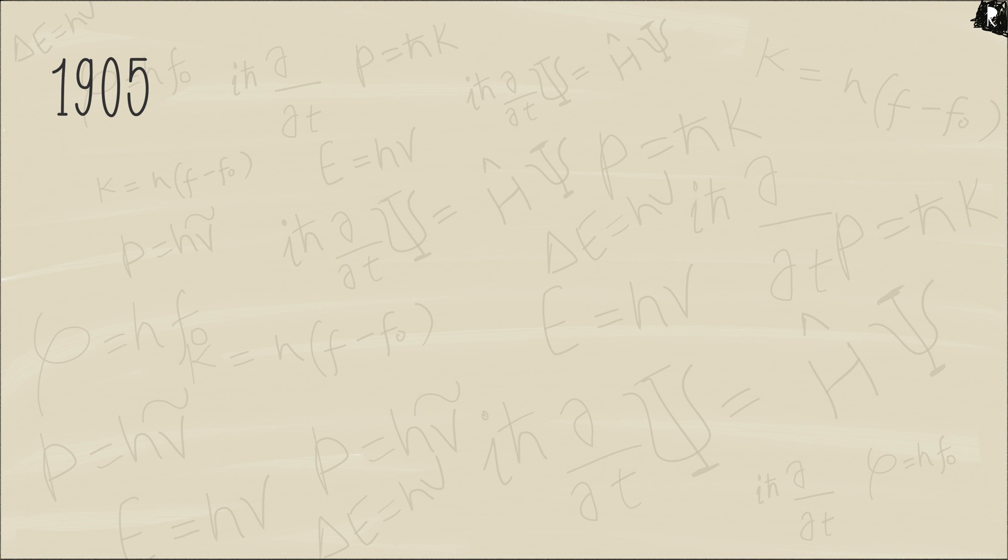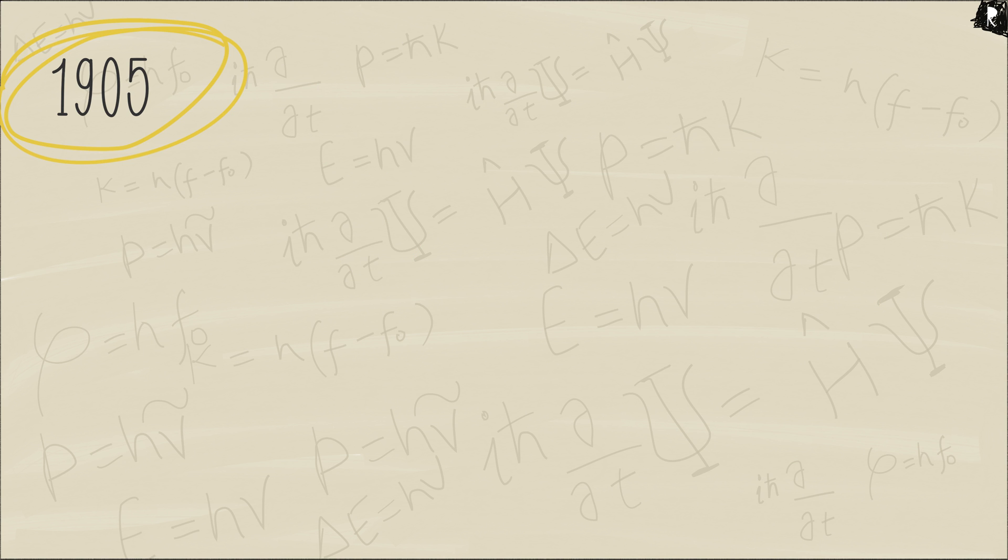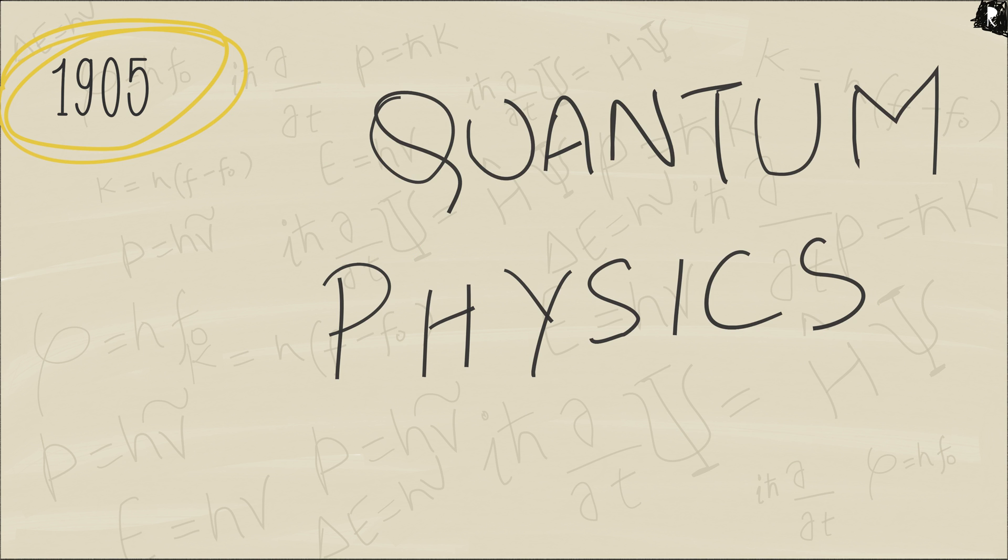Back in 1905, Einstein's interpretation of the photoelectric effect first appeared. At that time, quantum physics was at its peak.